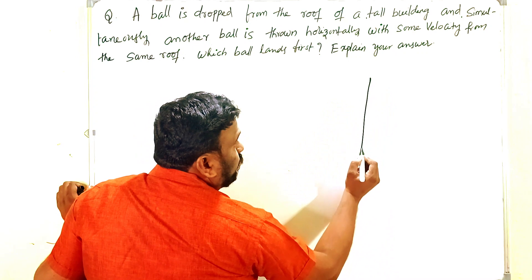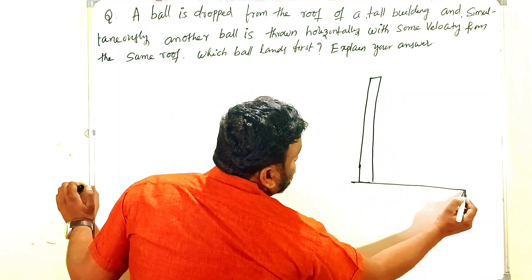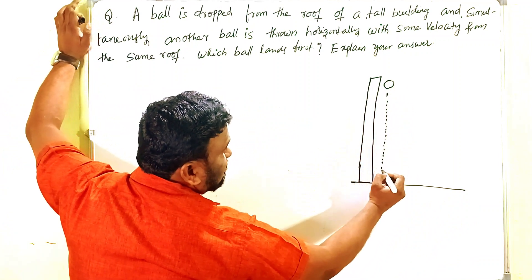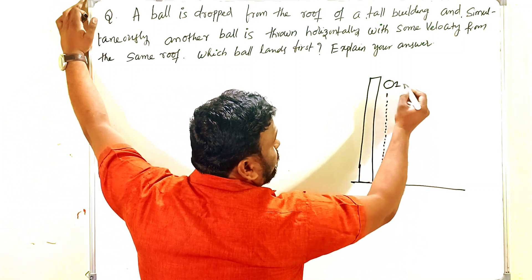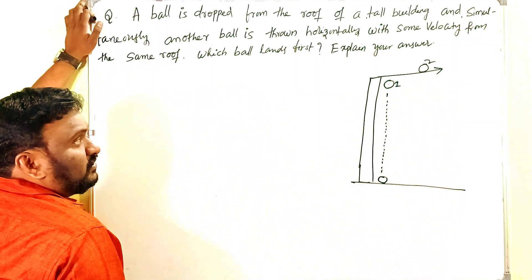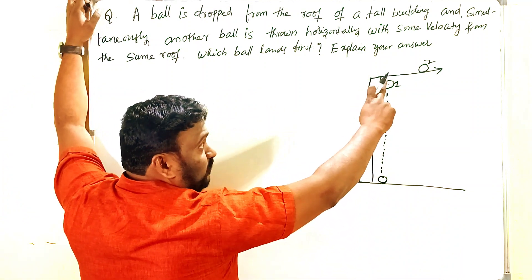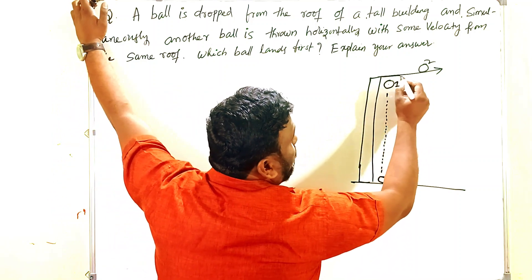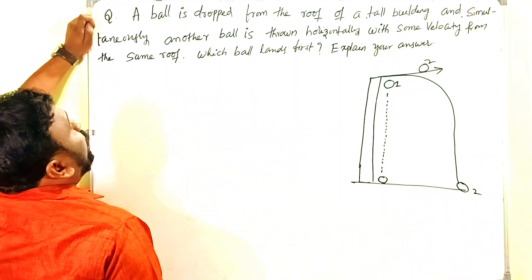This is a tall building and this is the ground. According to the problem, one ball is dropped and comes down in a straight path. Simultaneously, the other ball is projected horizontally. If any object is projected horizontally from a certain height, it reaches the ground in the path of a parabola — like this. This is the second ball.